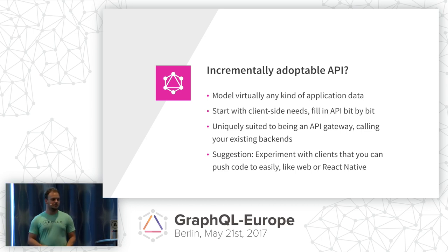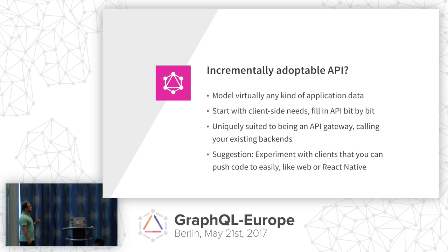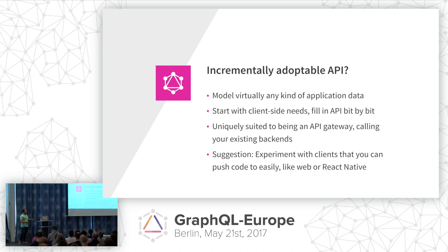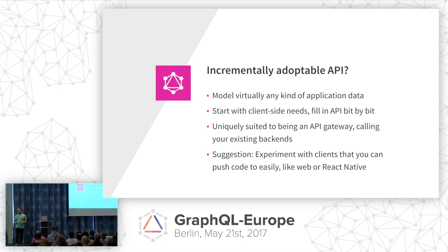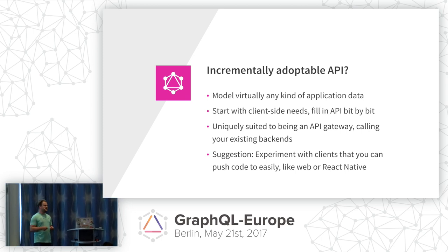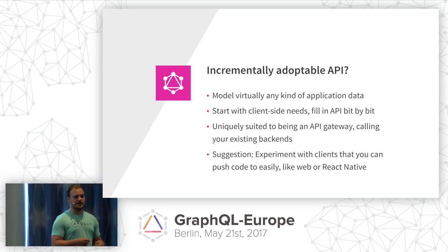How do you incrementally adopt an API? One of the greatest things, as Jonas said, is the resolvers. There's nothing about GraphQL that ties it to a particular backend, database, or storage system — you can model virtually any kind of application data. In your UI code, you probably already expect certain fields to be there, which is kind of like the de facto schema of your API that you haven't written down yet. You can start with the client-side needs, think about one component, think about what query you'd run for it, and implement just that part of the schema. GraphQL also works really well as an API gateway — you can put it on top of your existing REST API and get going right away.